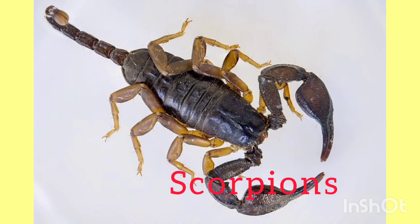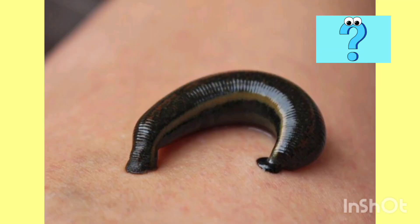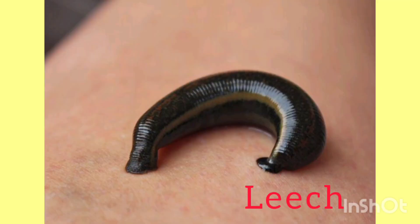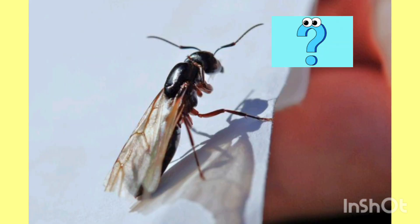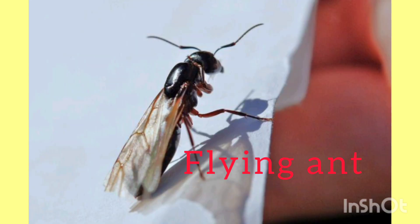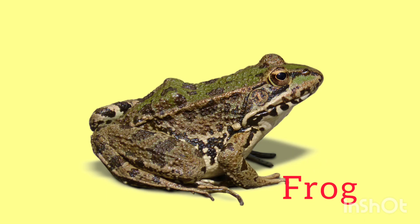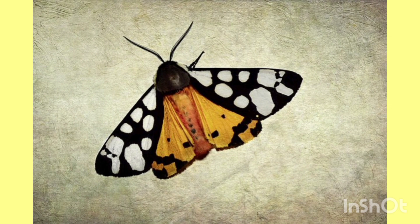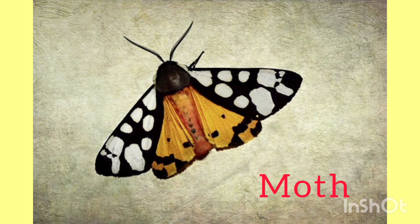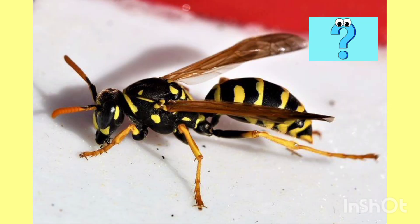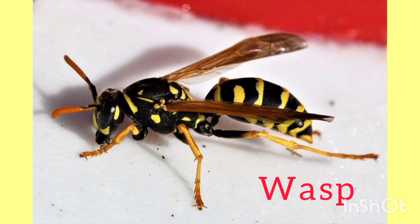Scorpion. Guess! One more — this is Leech. Very good! And this is Flying Ant. Well done, kids! And this is — yes — Frog. And this is Wasp.